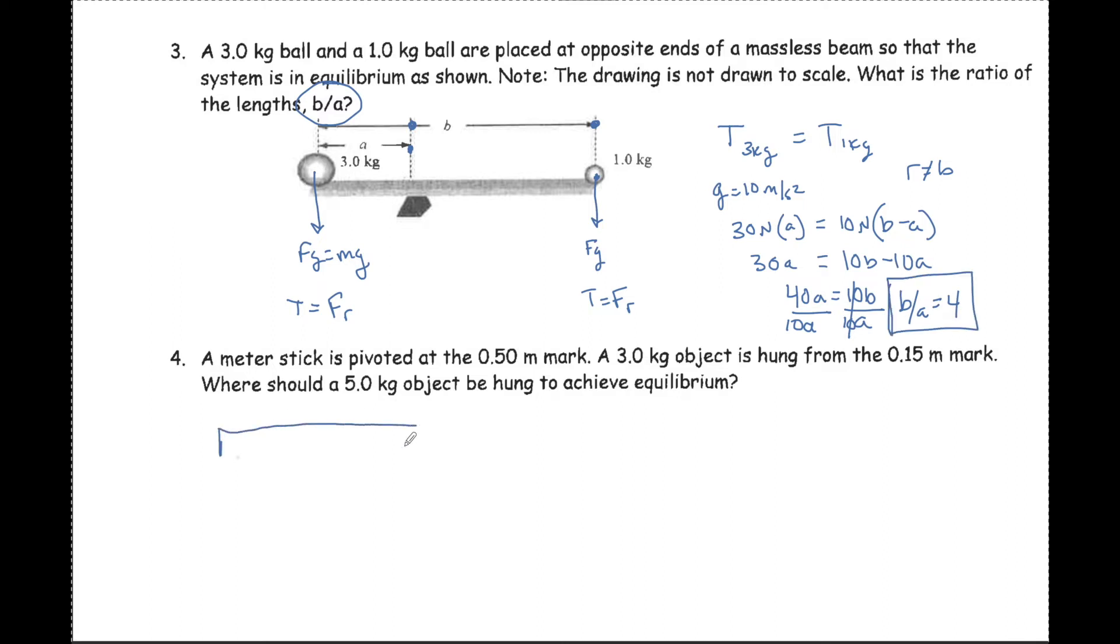The next question has a meter stick one meter long with a fulcrum pivot point at the midway point, 0.5 meters. A 3 kilogram object is hung from the 0.15 meter mark, so that's a 30 newton object. Where should a 5 kilogram object be held? So now I have a 50 newton force at some R distance.